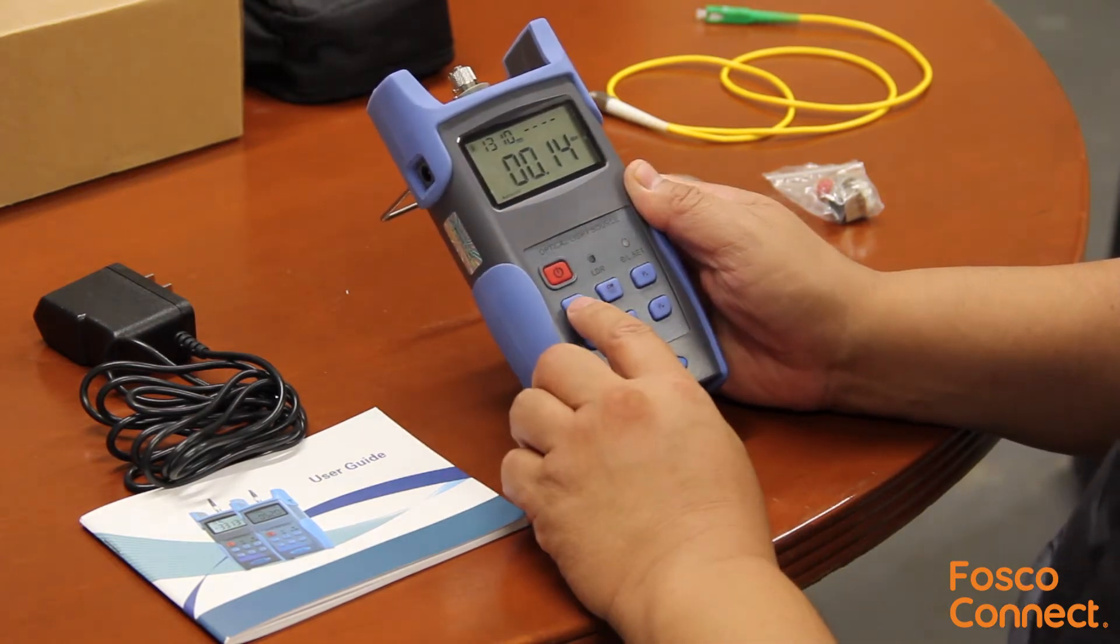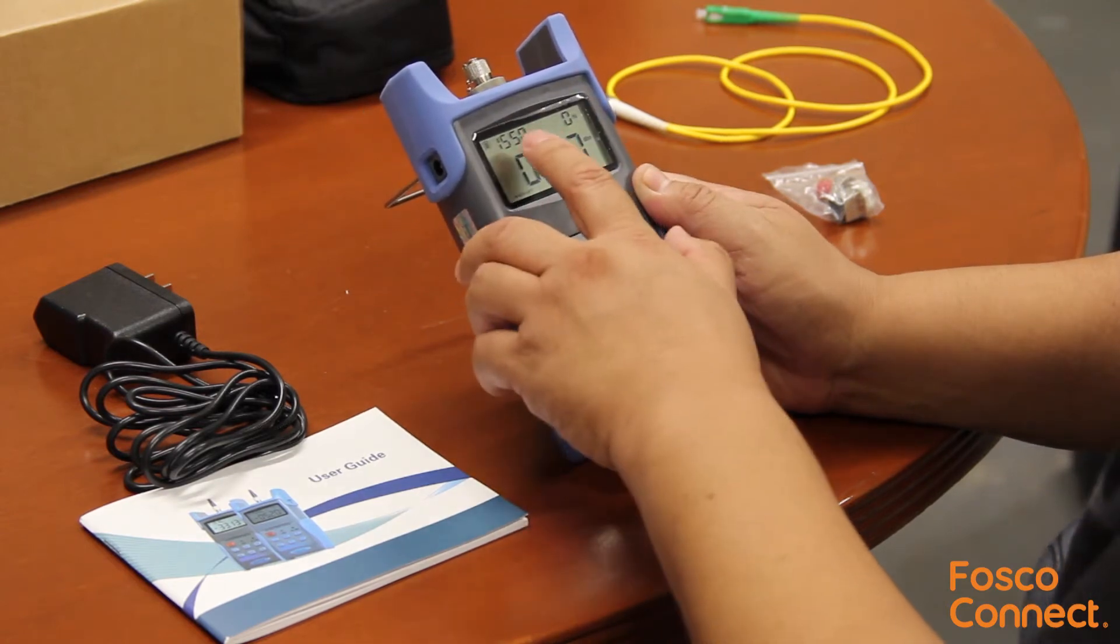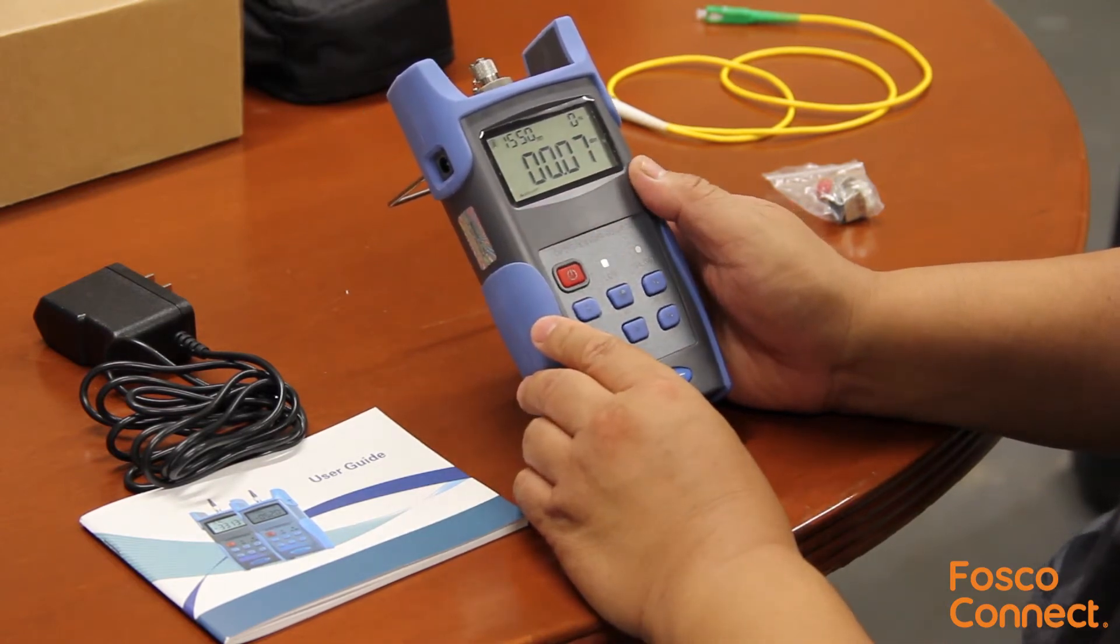This lambda button switches the wavelength. Now it's 1310 nanometers which we can switch to 1550 nanometers.